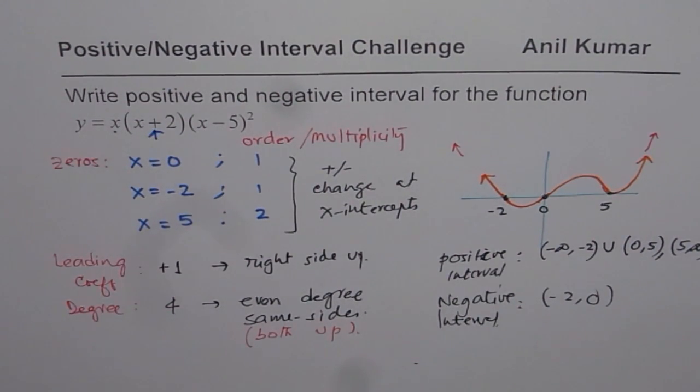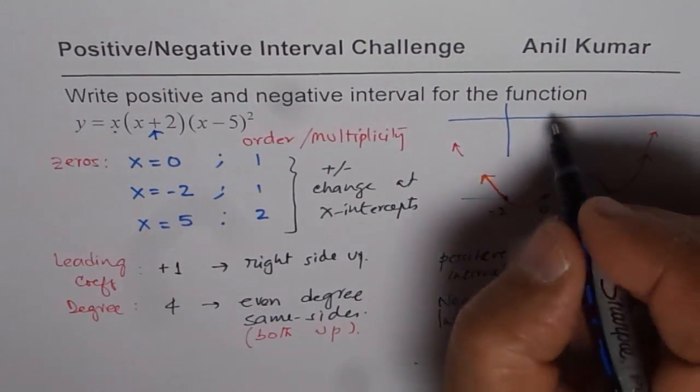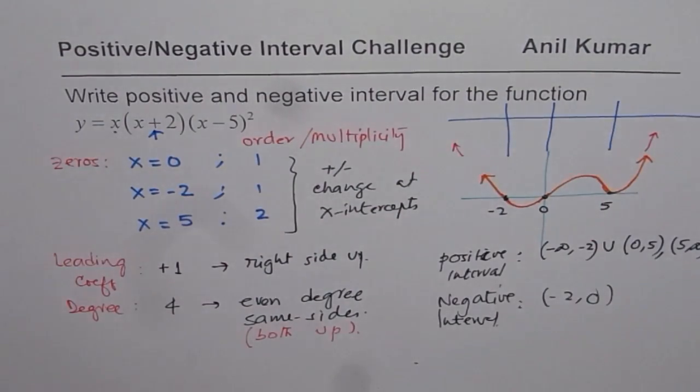So that is a good approach, sketching and then graphing. Alternate approaches, you could actually make a table. So in a table, what you should do is write down all your zeros.